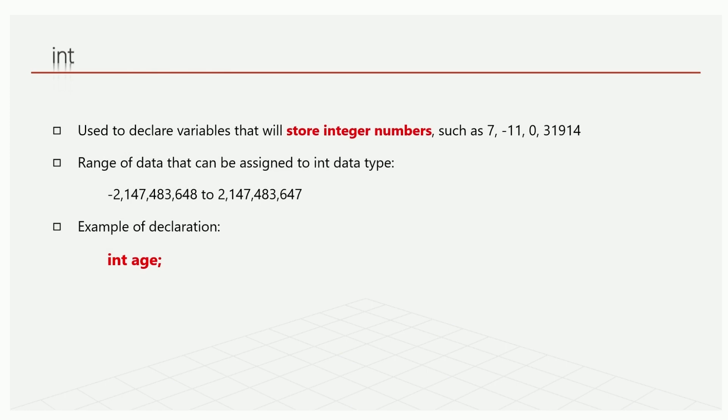Int stands for integer. It is used to declare variables that will store integer numbers only, whether negative or positive integer, as long as there is no floating point value, such as 7, -11, 0, 31914. This is the range of data.